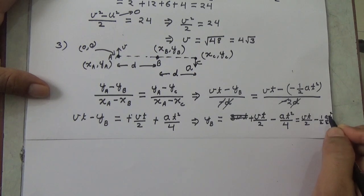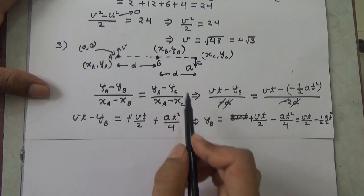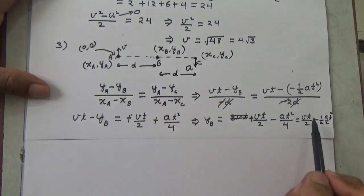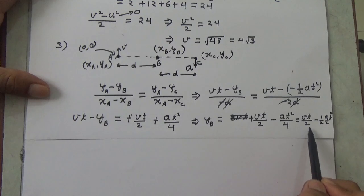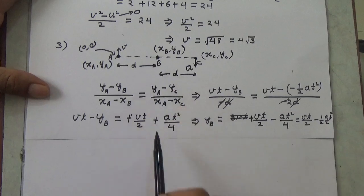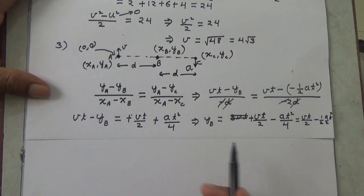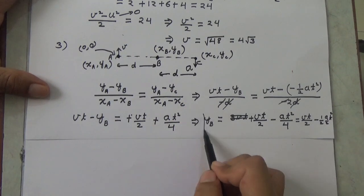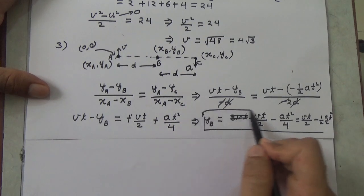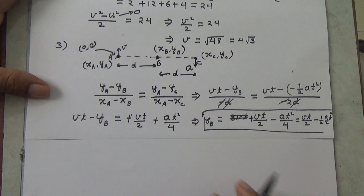So the point B should move with initial velocity v/2 upward and acceleration a/2 downward. This is the motion of particle B that keeps all three points collinear at all times.